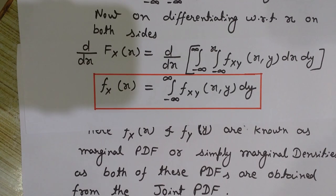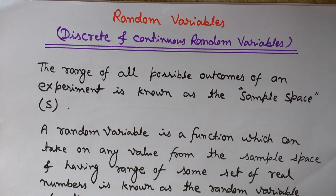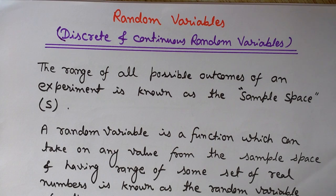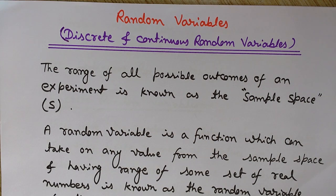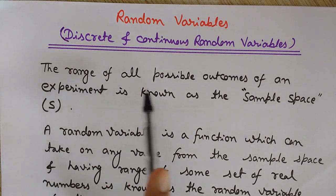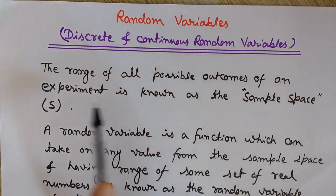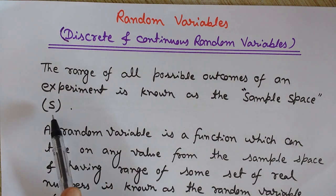Today we will discuss random variables — what are discrete random variables and continuous random variables. These are two types of random variables and we will discuss both kinds here. Before knowing what random variables are, let me tell you some terminologies that will be used. The range of all possible outcomes of an experiment is known as the sample space.